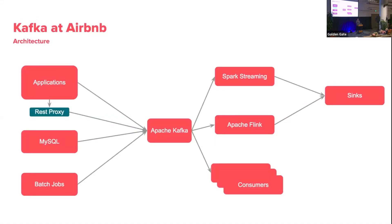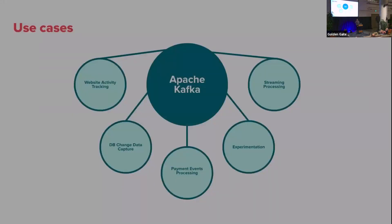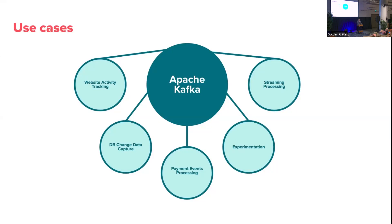This is our high-level architecture at Airbnb. We have a lot of applications talking to Kafka clusters directly using Kafka clients. We also built our own REST proxy to support Ruby and other languages. We support offline jobs and batching jobs to send data to Kafka. We use Spark Streaming and Apache Flink to send data from Kafka to a data warehouse. And of course, lots of applications consume data from Kafka clusters directly. Kafka is one of the most important pieces of infrastructure at Airbnb.